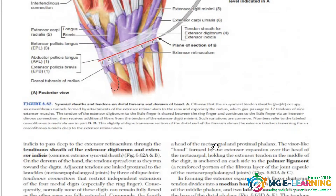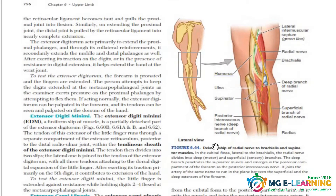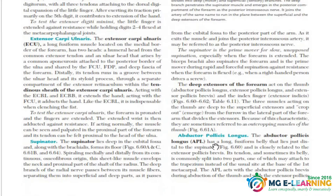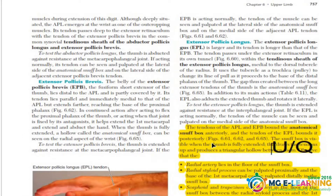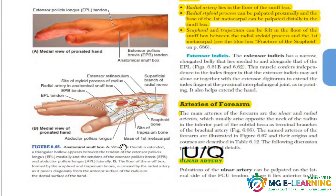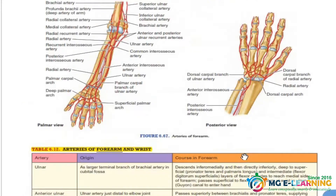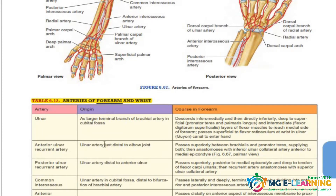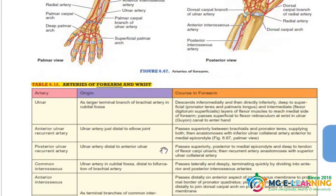The anatomical snuff box is a UQ — you should know this, it's a very famous UQ. Then we have the arteries of the forearm. Again, arteries of the forearm are very important — the course, the area of distribution, the muscles supplied, all very important. This table has to be done — very important.